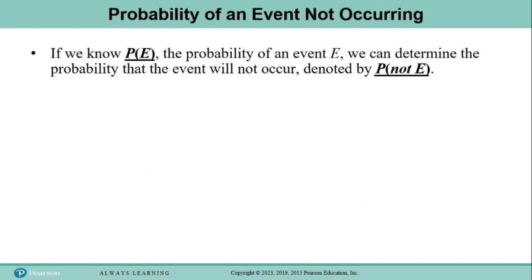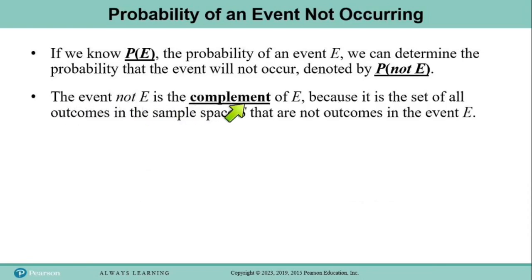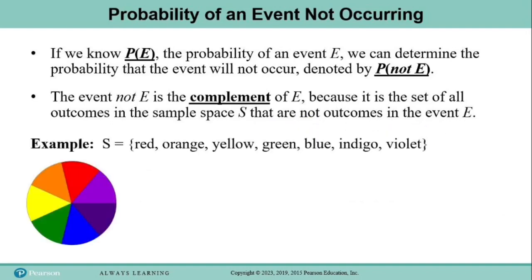Let's start by talking about the probability of an event not occurring. If we know the probability of an event E, then we can determine the probability that the event will not occur, written P of not E. The event not E is the complement of E — it is the set of all outcomes from the sample space S that are not outcomes in event E. For example, imagine we have a spinner where all seven colors from the rainbow are on the spinner, each taking up an equal amount of space. If event E is spinning either red, orange, or green,